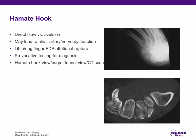The hamate hook can result from a direct blow or is thought to be an avulsion fracture when it occurs from a sporting event like golf or tennis. The ulnar nerve and ulnar artery are adjacent to the hamate hook, so when evaluating a patient for hamate hook fracture, it's always good to check ulnar artery and ulnar nerve function before surgical treatment commences.